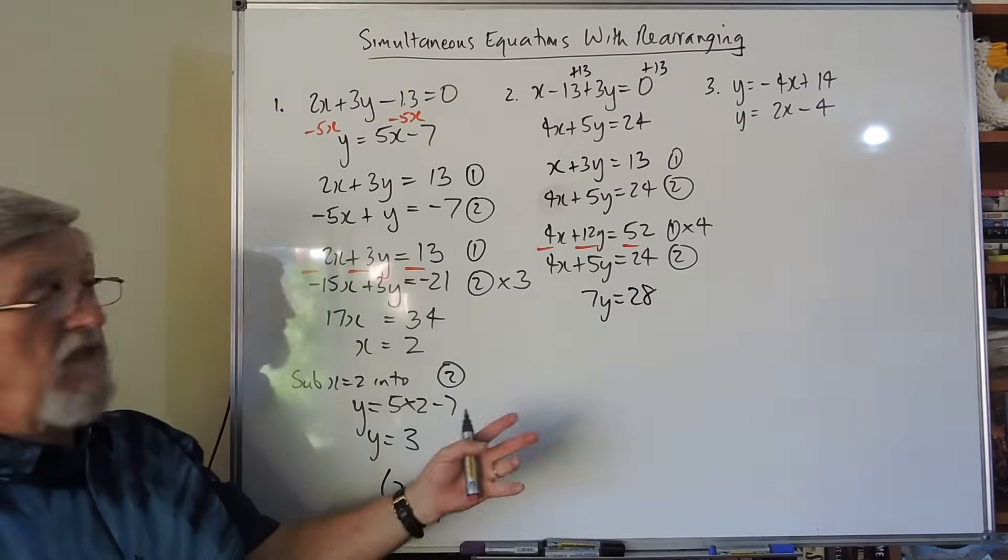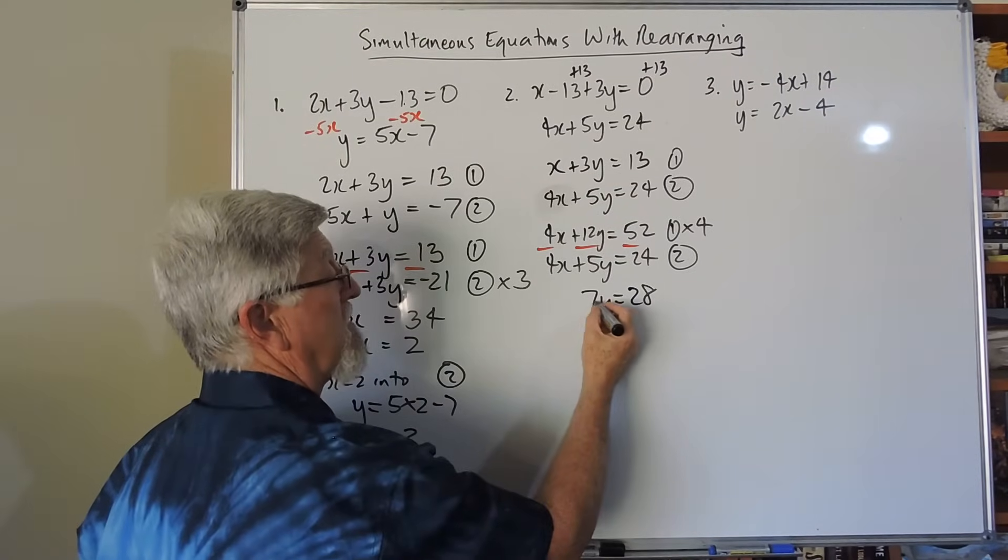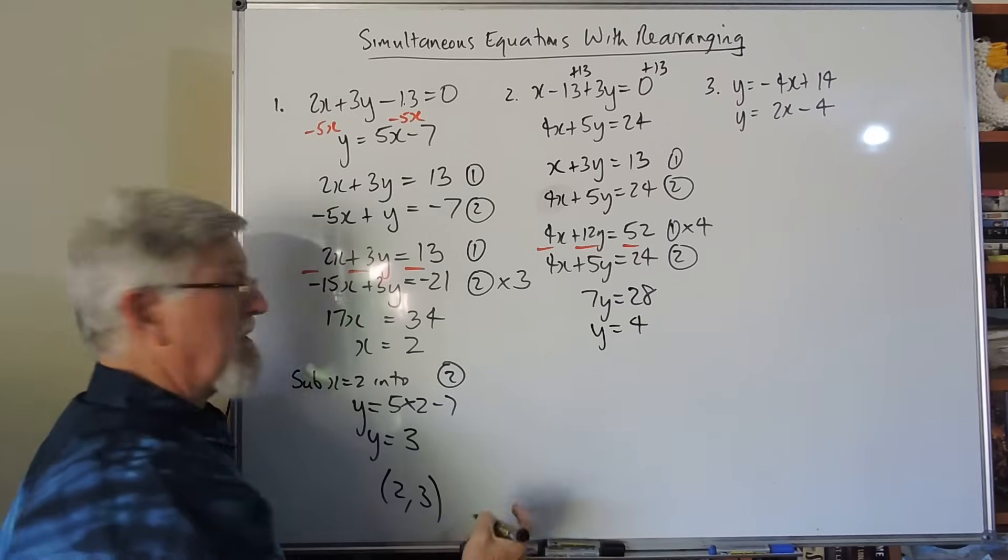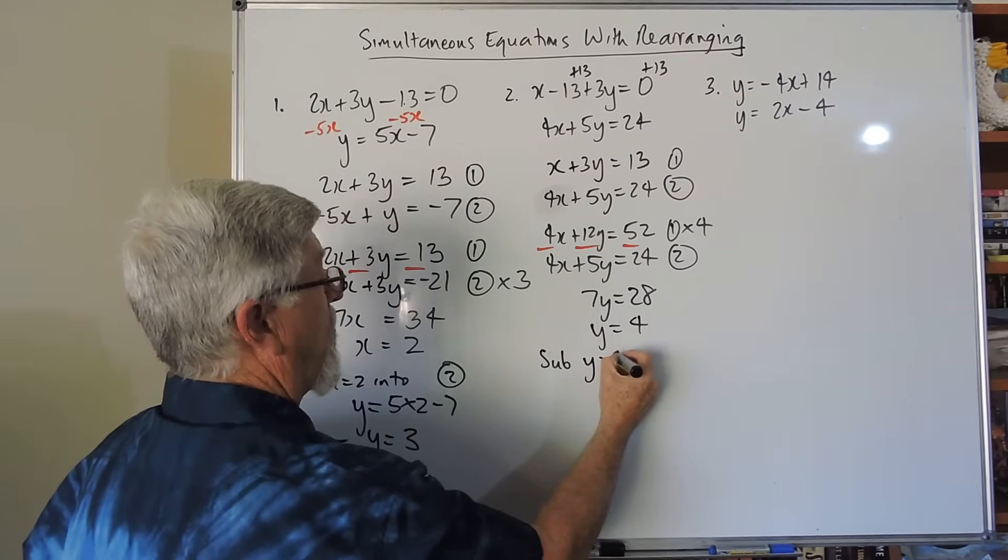Again, you're back to 7 times tables, but for those who are doing this, most of them should be okay with it. 7 watts of 24, the y is 4. Back to substitution, I can't talk properly.